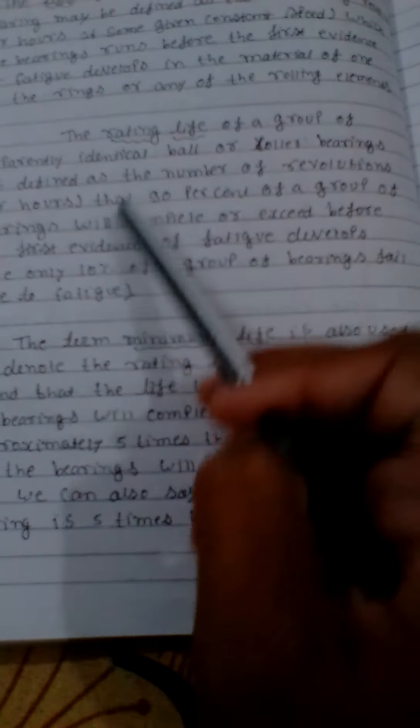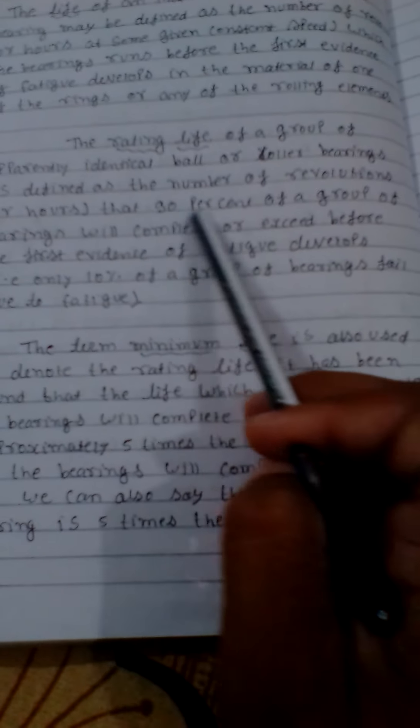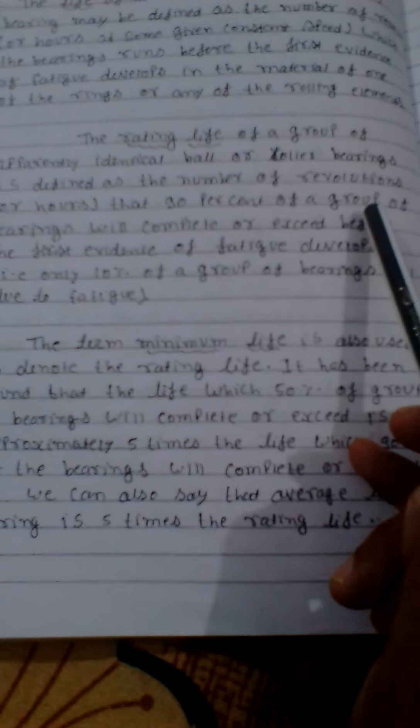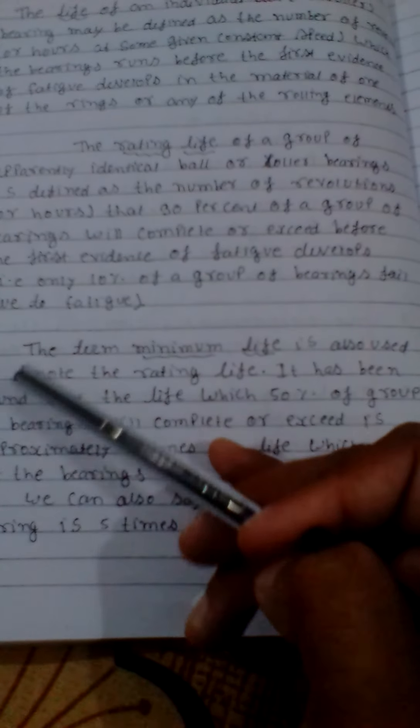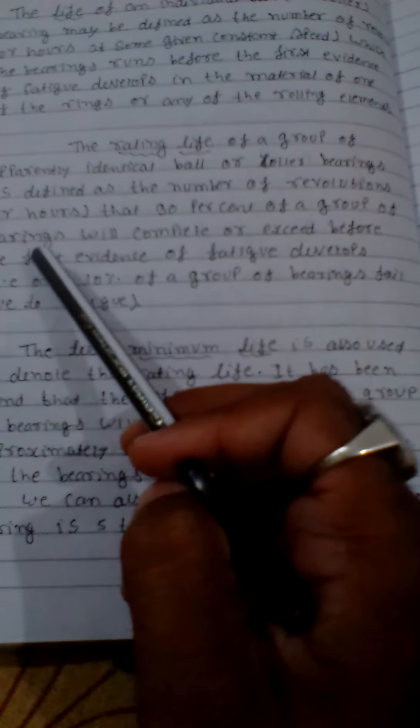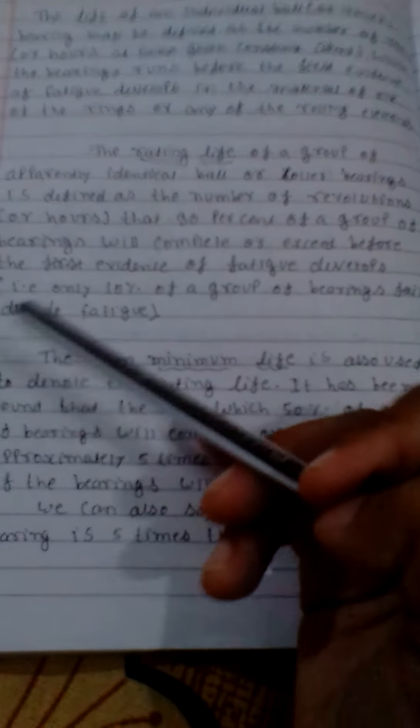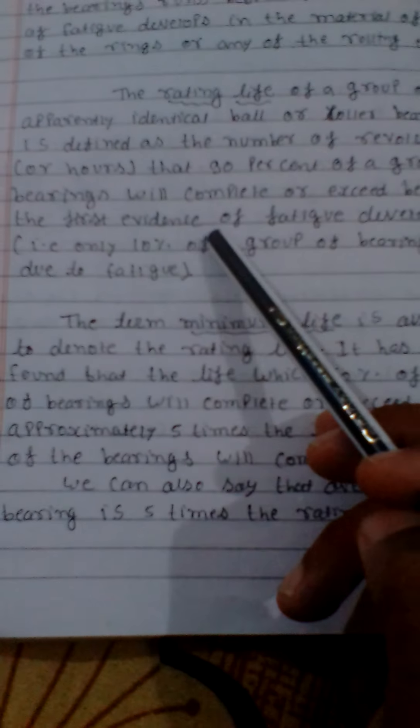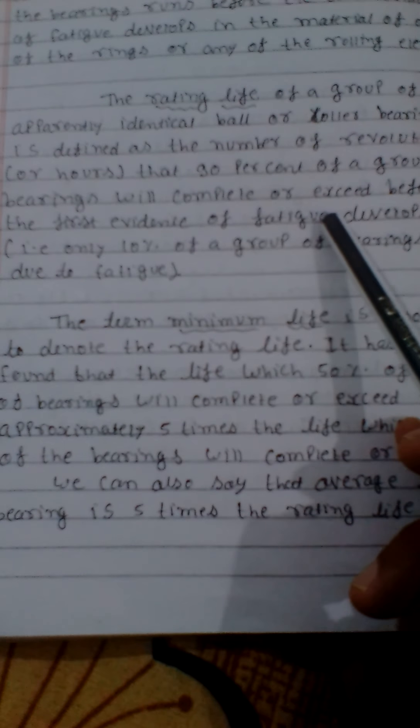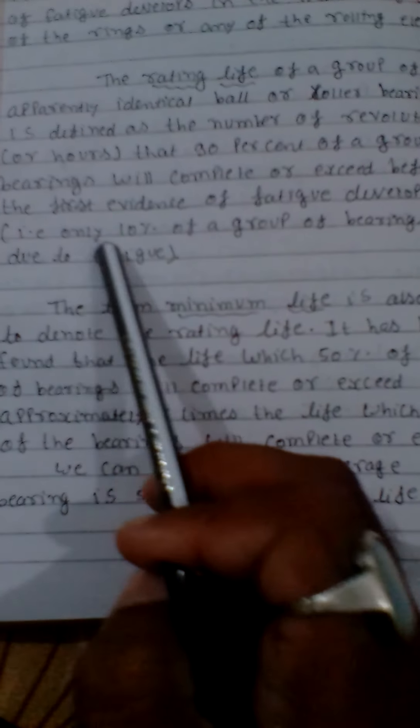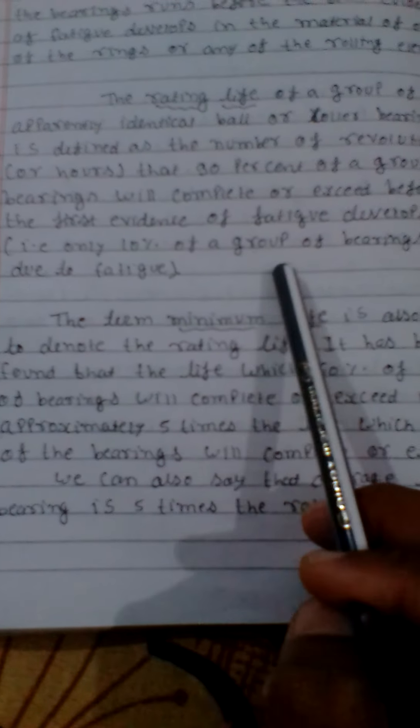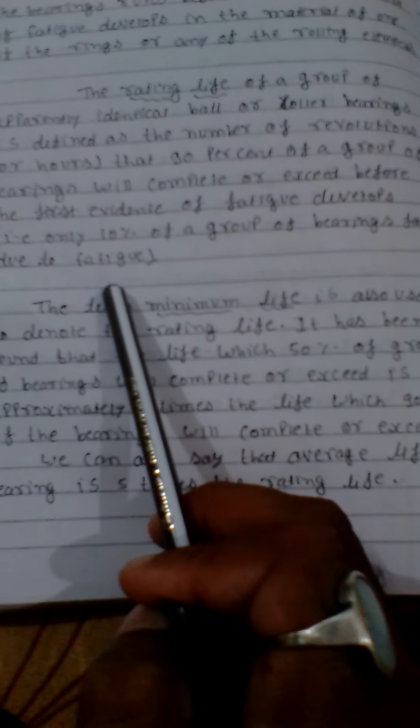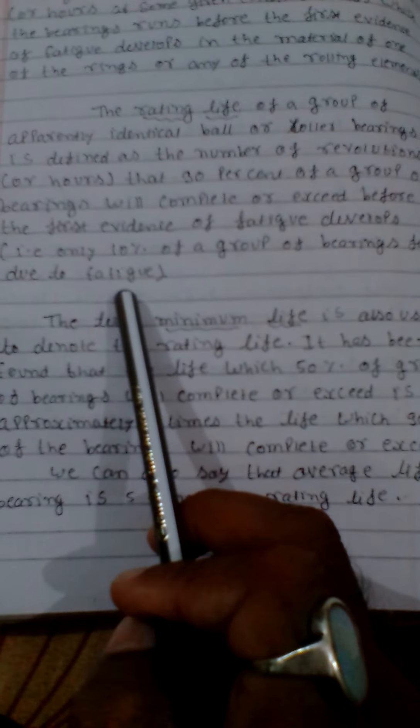This means that 90% of the bearings will complete or exceed the defined number of revolutions or hours, while 10% of the group of bearings will fail due to fatigue.